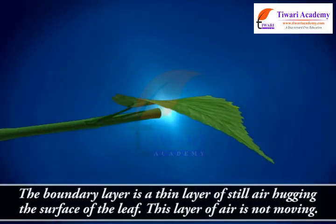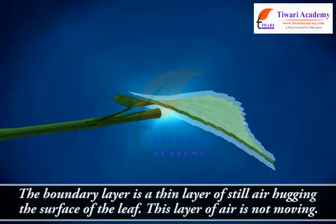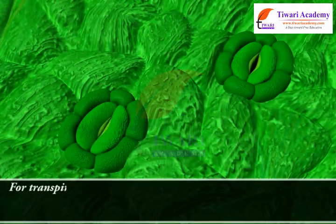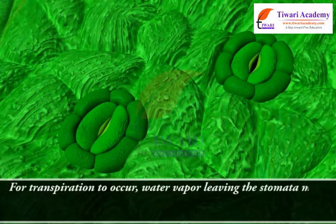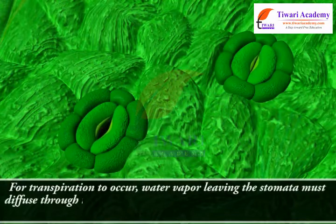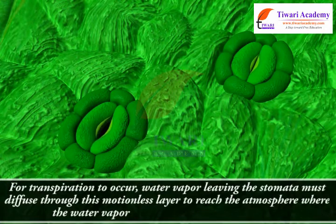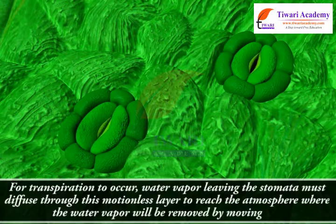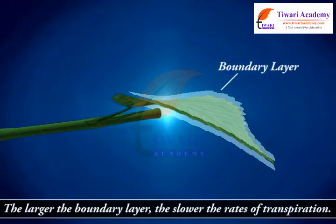The boundary layer is a thin layer of still air hugging the surface of the leaf. This layer of air is not moving. For transpiration to occur, water vapor leaving the stomata must diffuse through this motionless layer to reach the atmosphere, where the water vapor will be removed by moving air. The larger the boundary layer, the slower the rate of transpiration.